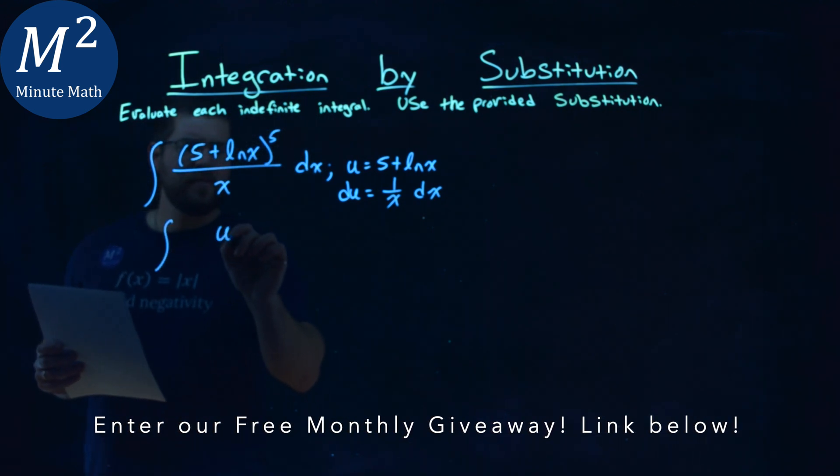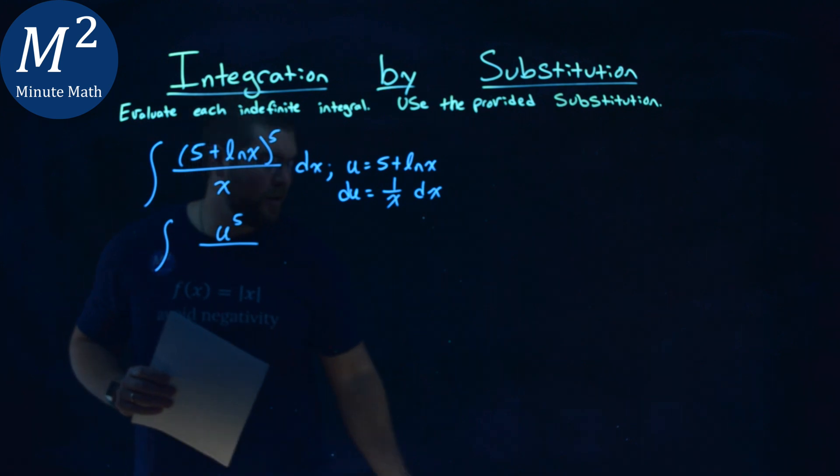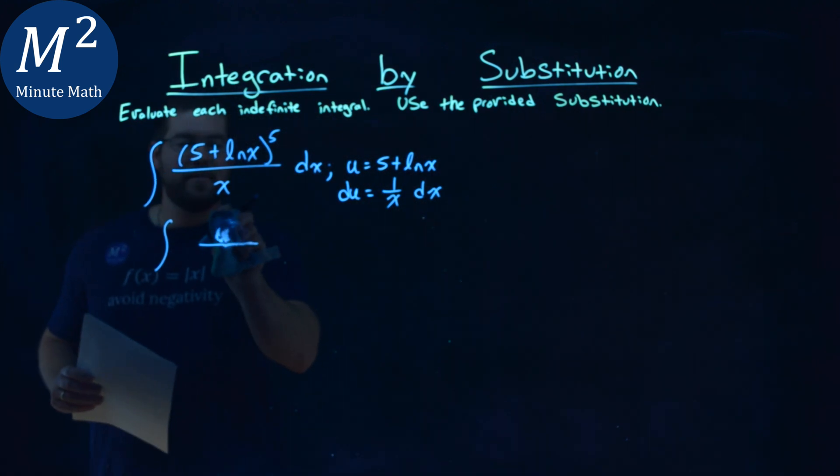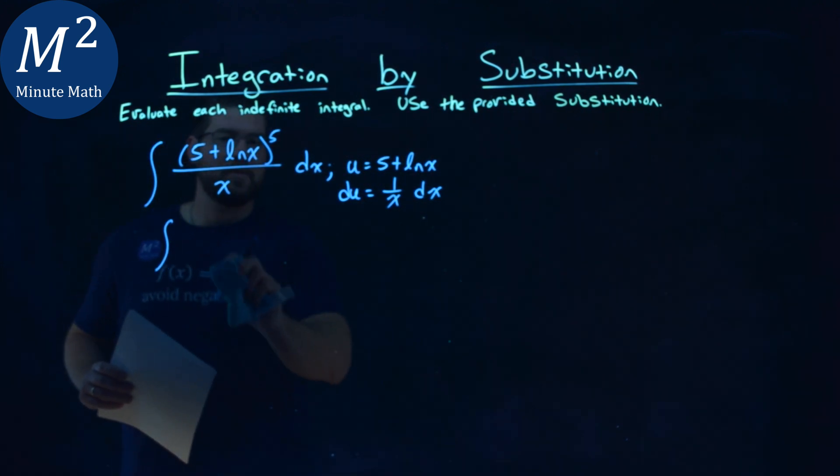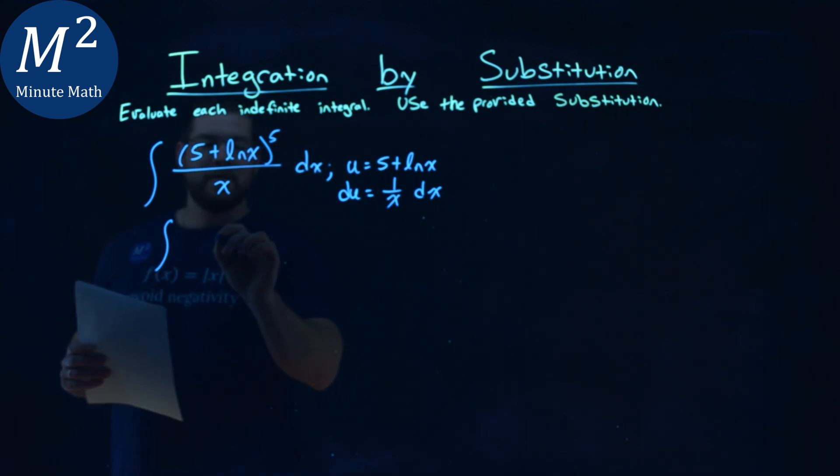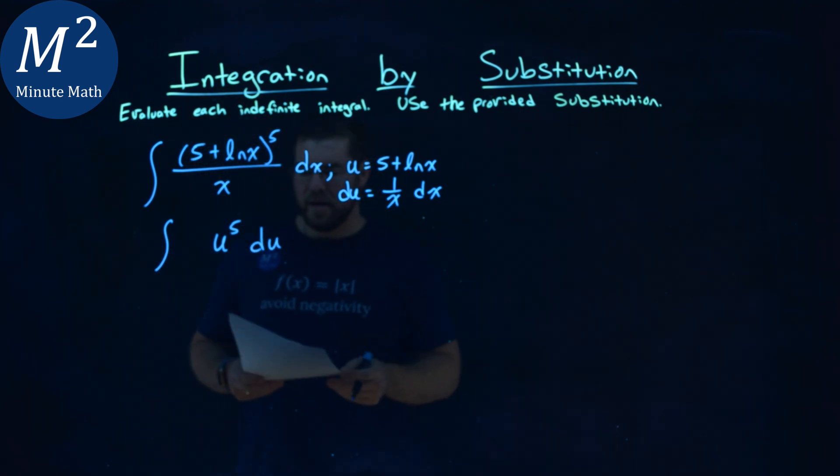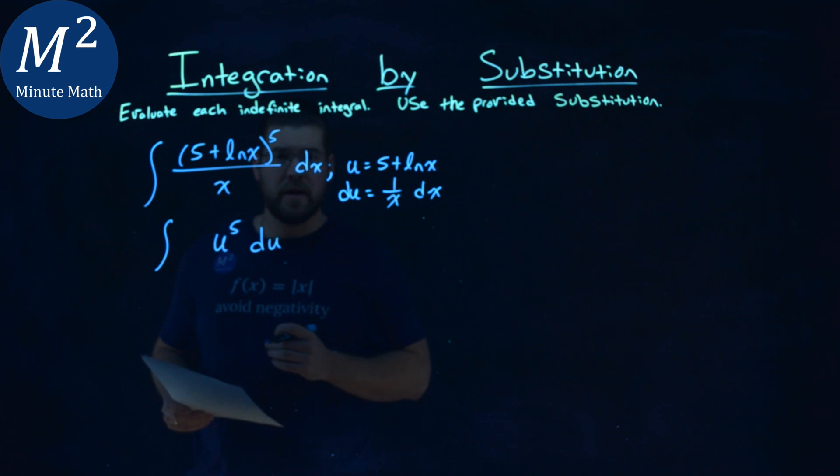and we just have u to the fifth power. So we have u^5 there, and then that 1/x dx is just a du. And this actually becomes a much easier problem to solve now.